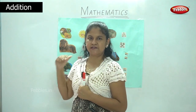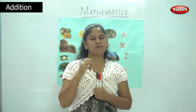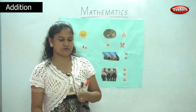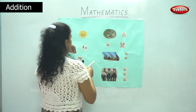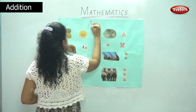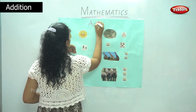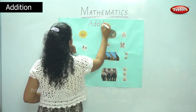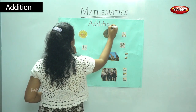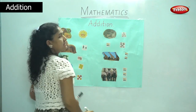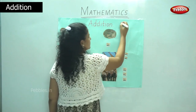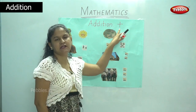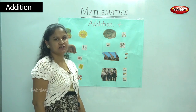So now we have a small activity and we are going to add the number of pictures to get the answer. Are you ready? Shall we start, children? And the symbol that we use for addition is the plus sign. So this is the symbol or the sign that we use for addition.